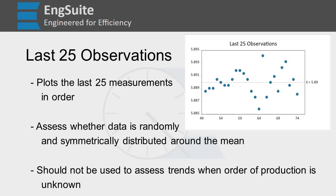If you do know the production order, this can be an incredibly helpful chart to figure out if your data is random or if you have trends. We do want random data, because that means if we were to draw a line, we would stay around the mean. Whereas if we have a trend and we were to continue that trend out, we're guessing that somewhere we're going to end up out of spec.